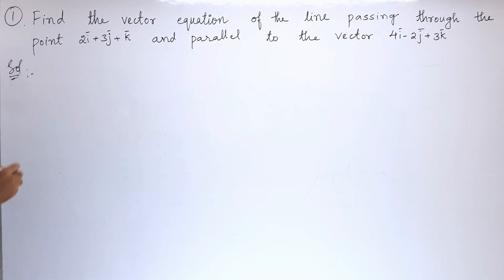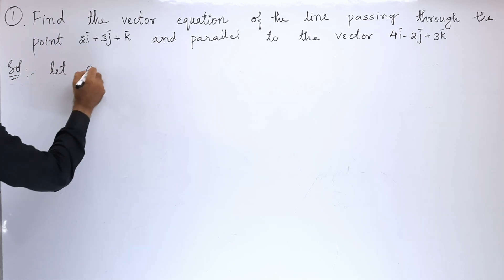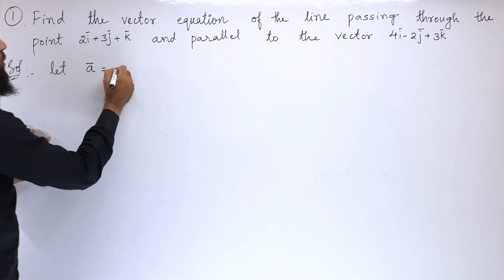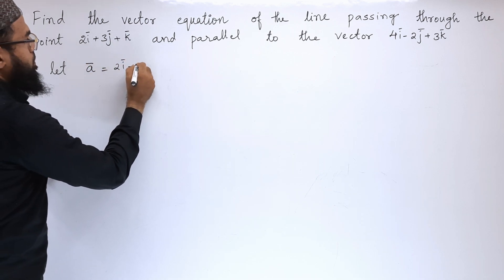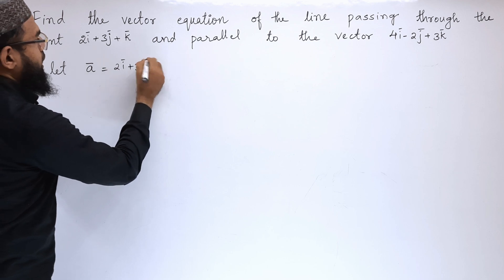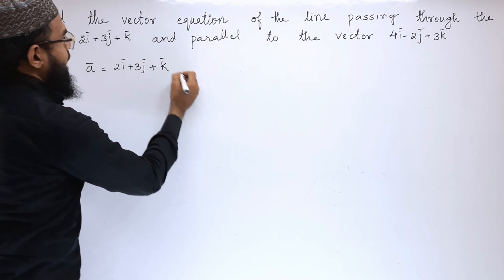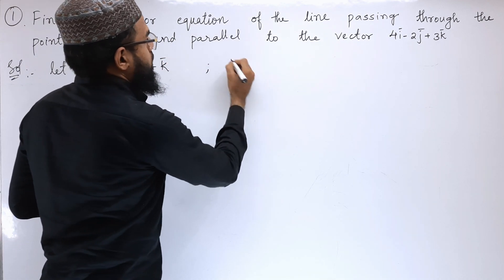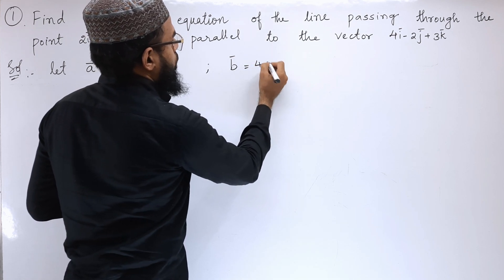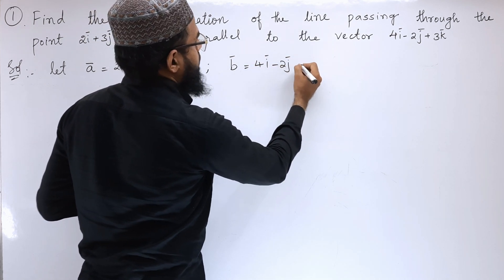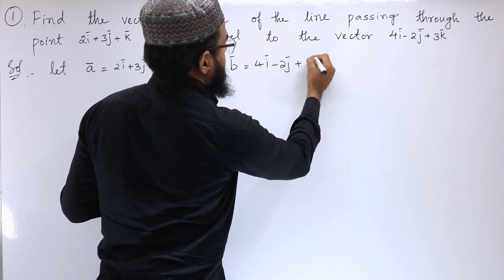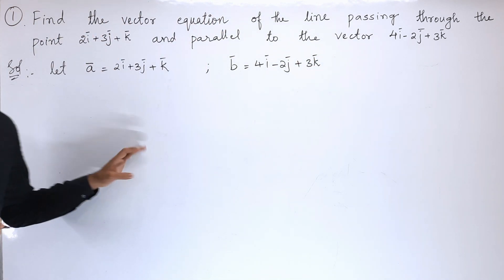So in solution, let us write these given vectors as: let vector a equals 2i cap plus 3j cap plus k cap, and the vector b equals 4i cap minus 2j cap plus 3k cap. So these are the two vectors.